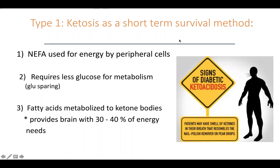We talked about an intro to type 1 diabetes and some things that can happen based on the lack of insulin. As insulin levels decline or are completely eliminated due to beta cell death, the body starts relying on NEFA for fuel — NEFA is non-essential fatty acids. We can use non-essential fatty acids because we don't need insulin to use them.